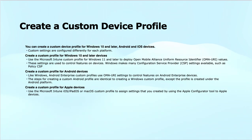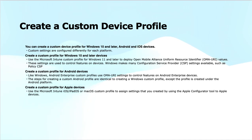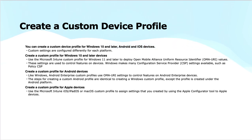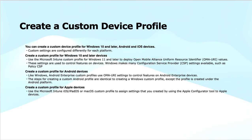The steps for creating custom Android profiles are identical to creating Windows custom profiles, except the profile is created under the Android platform. You will also find a link in the description for more details on OMA-URI. You can also create custom profiles for Apple iOS, iPadOS, or macOS devices, using the Apple Configurator tool. For all three — the Policy CSP for Windows, OMA-URI for Android, or Apple Configurator for Apple devices — you will find links in the description section with many useful resources.